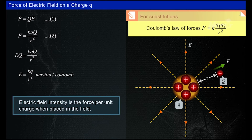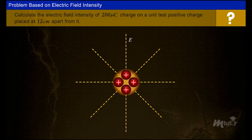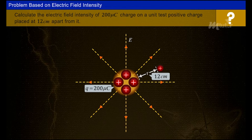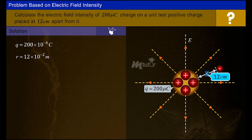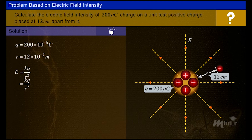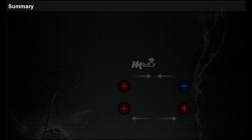Electric field intensity E is measured in newtons per coulomb and is defined as the force per unit charge placed in the field. To calculate the electric field intensity: given a 200 microcoulomb charge (q = 200 × 10⁻⁶ C) and a unit test positive charge placed 12 cm (r = 12 × 10⁻² m) away, using E = k × q / r² and substituting the values, E is obtained as 1.25 × 10⁸ N/C.